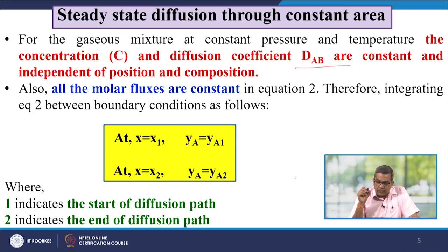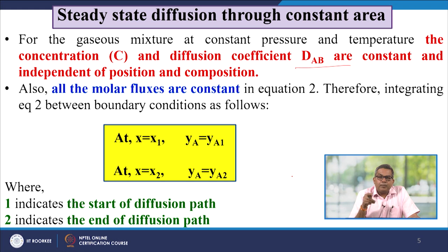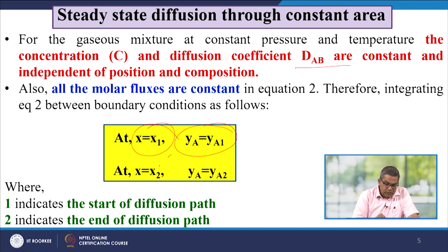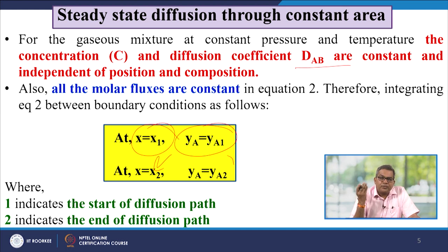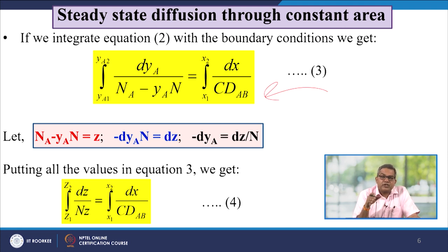Therefore, if we integrate equation number 2 between the boundary conditions — at x equals x1, yA equals yA1, and at x equals x2, yA equals yA2 — where 1 indicates the start of diffusion path and 2 indicates the end of diffusion path, then we get this particular equation with those boundary conditions.